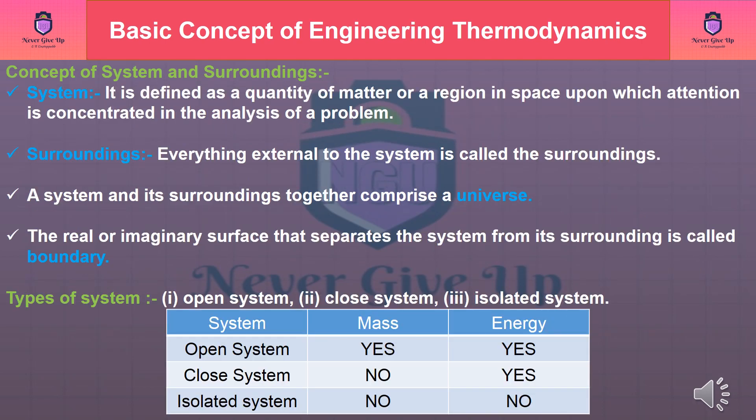Concept of system and surroundings. System: It is defined as a quantity of matter or a region in space upon which attention is concentrated in the analysis of a problem. Surroundings: Everything external to the system is called the surroundings. A system and its surroundings together comprise a universe. The real or imaginary surface that separates the system from its surroundings is called the boundary.